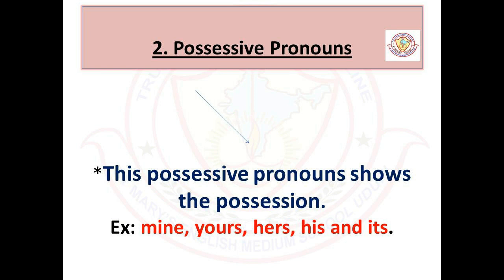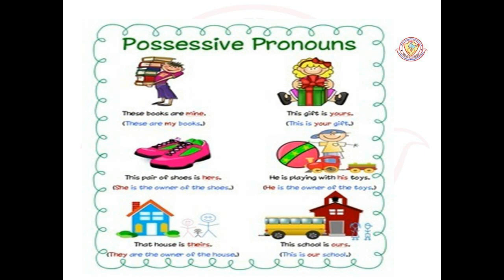Second, we have possessive pronouns. Possessive pronouns show possession. Examples: mine, yours, hers, his, and its. For example: 'These books are mine' — these are my books. 'This gift is yours' — this is your gift. 'This pair of shoes is hers' — she is the owner of the shoes. 'He is playing with his toys' — he is the owner of the toys. 'That house is theirs' — they are the owner of the house. 'This school is ours' — this is our school. The highlighted words in the first sentences are the possessive pronouns: mine, yours, hers, his, theirs, and ours.